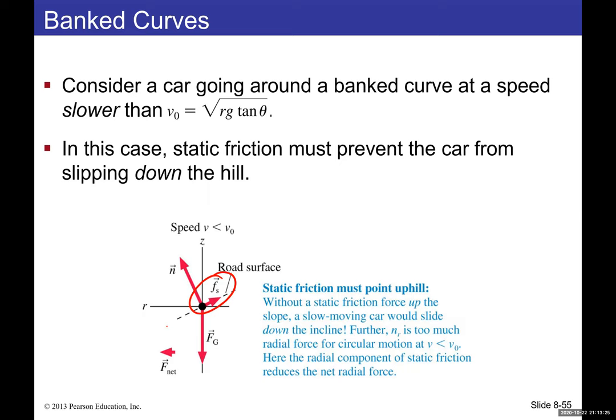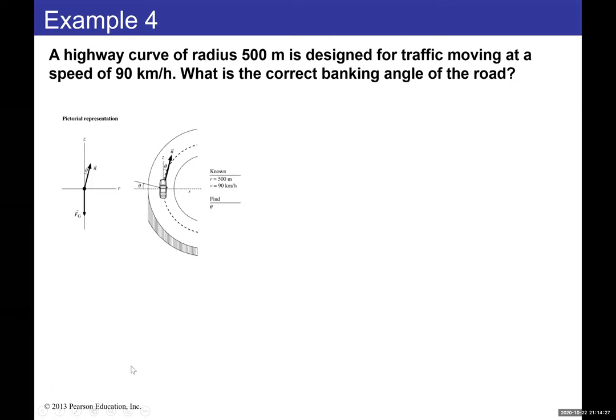The posted designated speed assumes dry conditions. On a wet road, the coefficient of static friction decreases, lowering the safe speed. So in wet or icy conditions, slow down below the posted speed to safely make the turn.